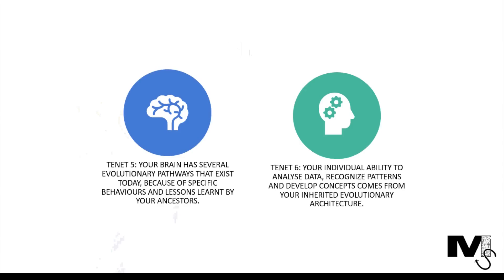Tenet 5 also proposes that your brain has several evolutionary pathways that exist today because of specific behaviours and lessons learnt by your ancestors. Tenet 6 states that the more diverse your specific pathways, the more challenges you will be able to overcome in your current life. Your individual ability to analyse data, recognise patterns and develop concepts in the modern world comes from the specific evolutionary architecture you have inherited, meaning different people have different capabilities and different ways of analysing data in any context.